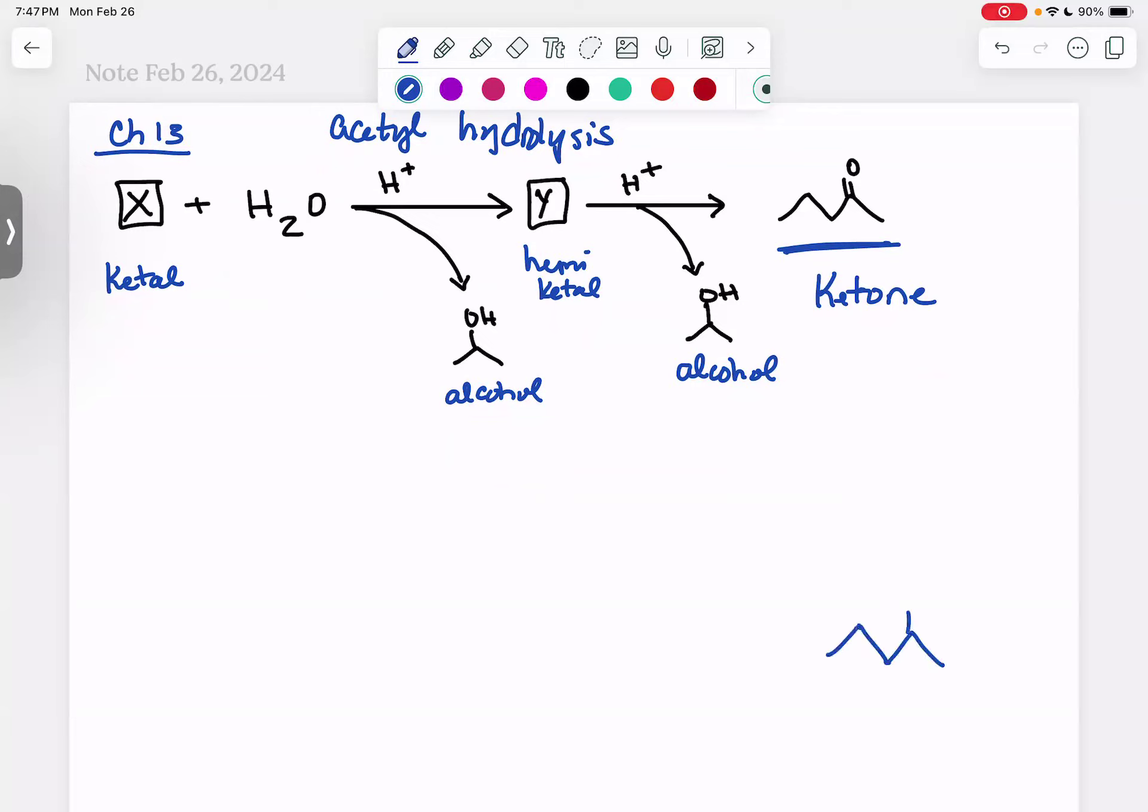Our ketone has our carbonyl group - that's the ketone. Now I'm going to go in reverse. What am I going to add to it? I'm going to have my ketone, and to that ketone I'm going to add this alcohol, this molecule with a hydroxyl.